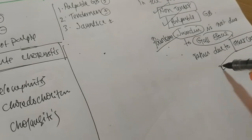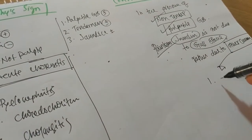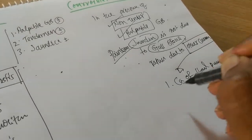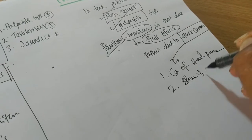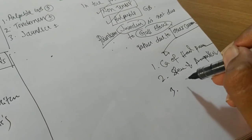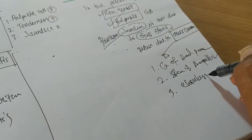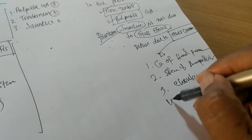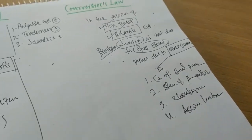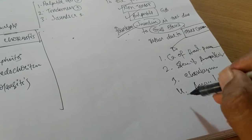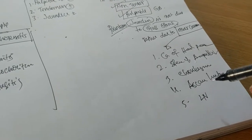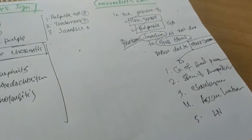The other pathologies are: number one, carcinoma of the head of the pancreas; number two, stenosis of the ampulla of Vater; number three, cholangiocarcinoma — carcinoma of the common bile duct; number four, very rarely, Ascaris lumbricoides worm inside the common bile duct; and number five, extrinsic pressure on the common bile duct, such as lymphadenopathy around the common bile duct.